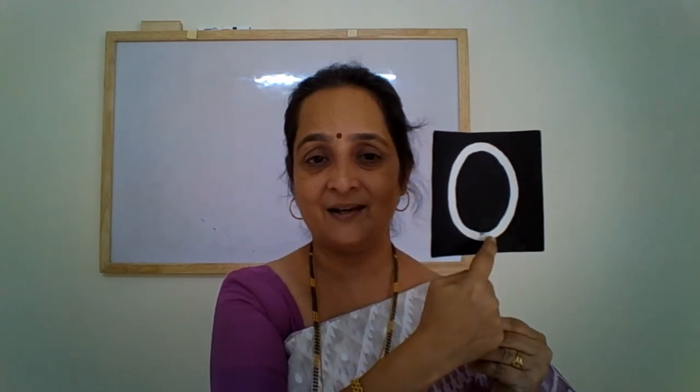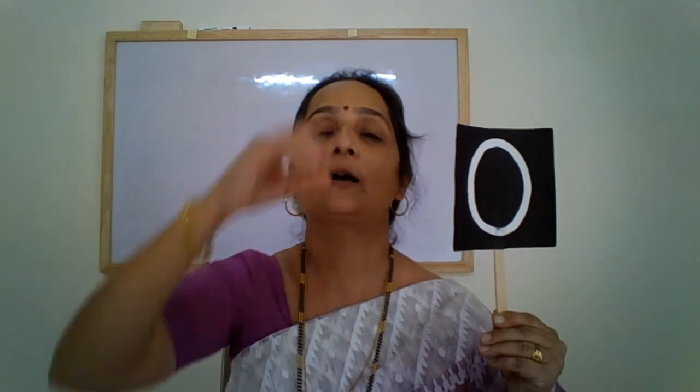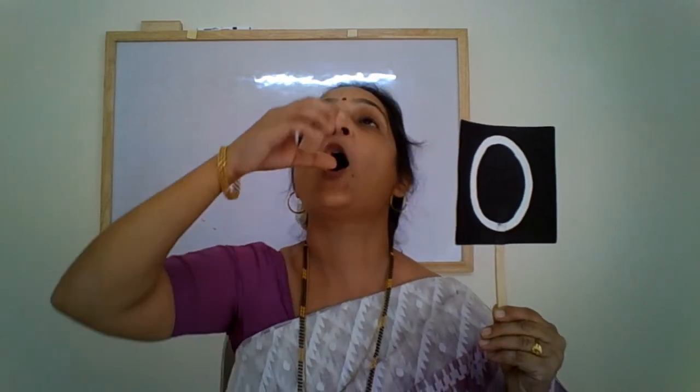Hello children, here I am back with another letter for you, and this time it is letter O — a big oval. Letter O looks like a big oval. It makes the sound O.